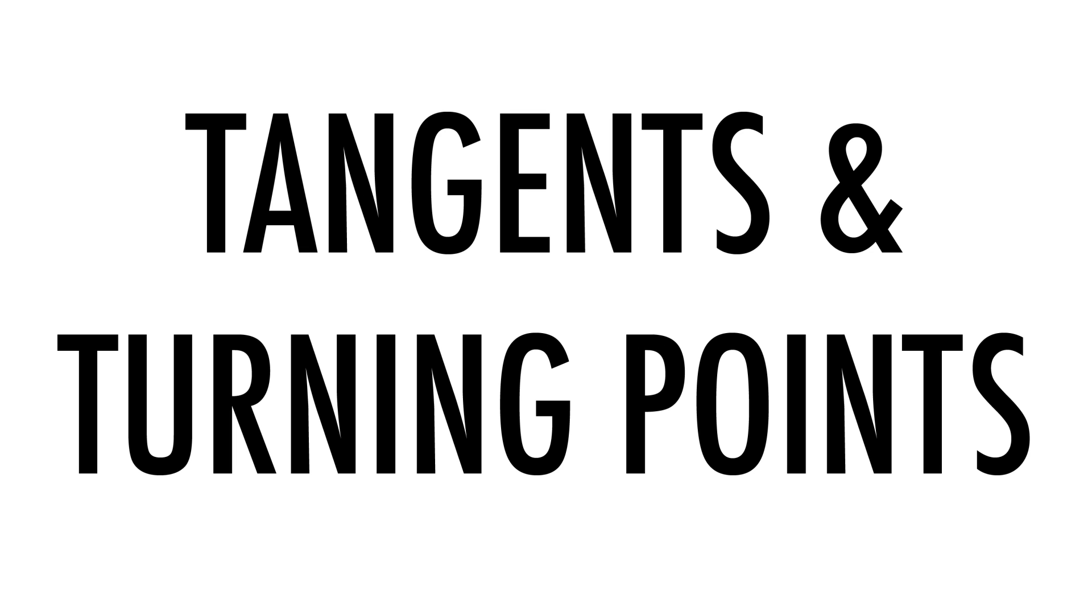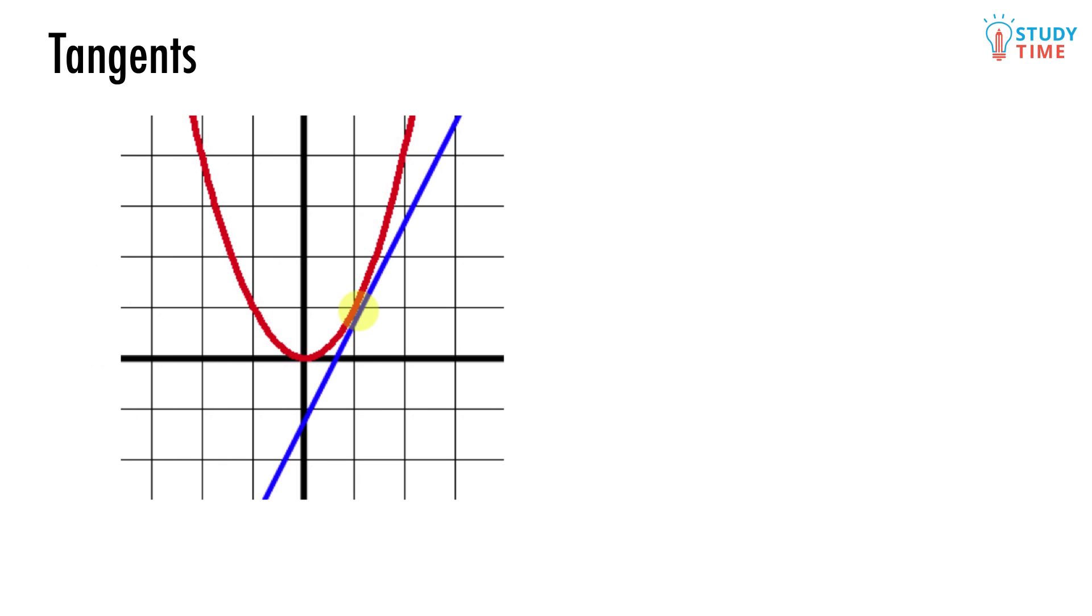A tangent is basically a straight line, but it's a very special kind of straight line. A tangent is a straight line that's going to barely touch a curved line at a single point, once and only once.